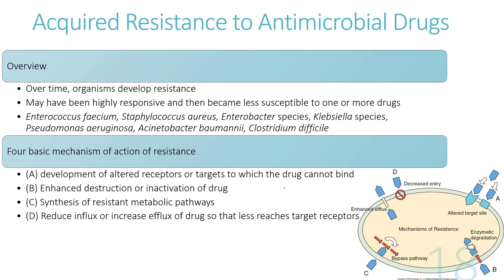Some bacteria have acquired resistance to antimicrobial drugs. Organisms that were once highly responsive to drugs become less susceptible because of one of four basic mechanisms of resistance — labeled A, B, C, and D.